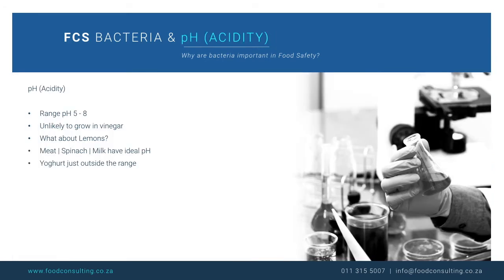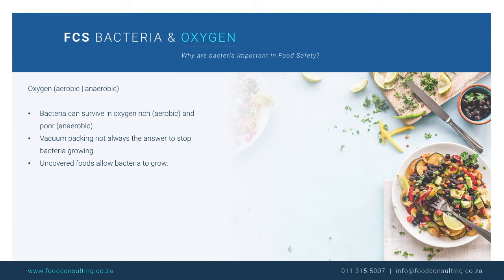The pH and acidity level also affects how bacteria grow and how effectively they can survive. Bacteria in food thrive in a pH range of 5 to 8, meaning items such as vinegar are unlikely to support bacterial survival. Lemons are often cited for antibacterial properties; the pH does discourage bacterial growth but is not a major factor in killing bacteria from cross-contamination. Meat, spinach, and milk are within the ideal pH range, while yogurt, with a pH just below that range, is generally considered less risky than milk. Bacteria can grow in both oxygen-rich and poor environments, meaning vacuum-packed meals are not free from concern, and leaving foods uncovered also allows bacteria to grow.